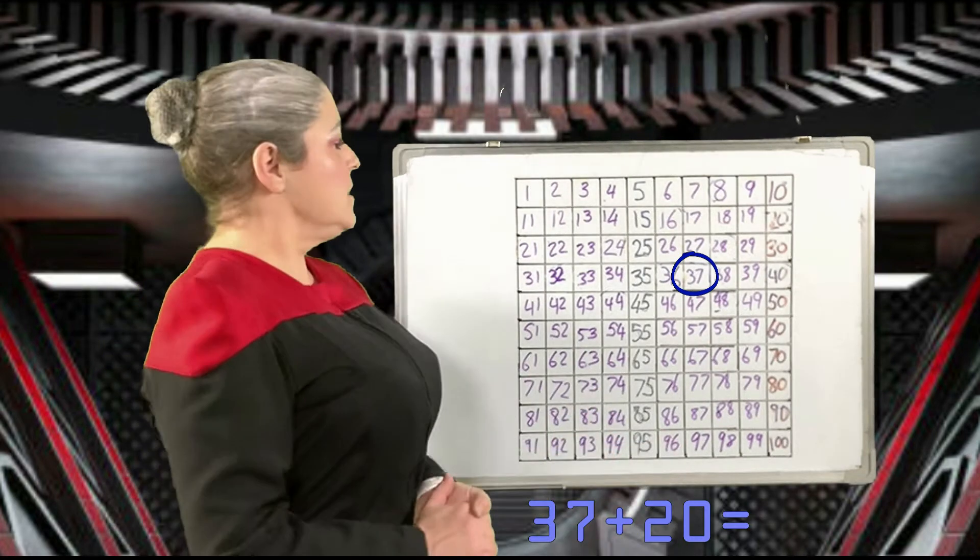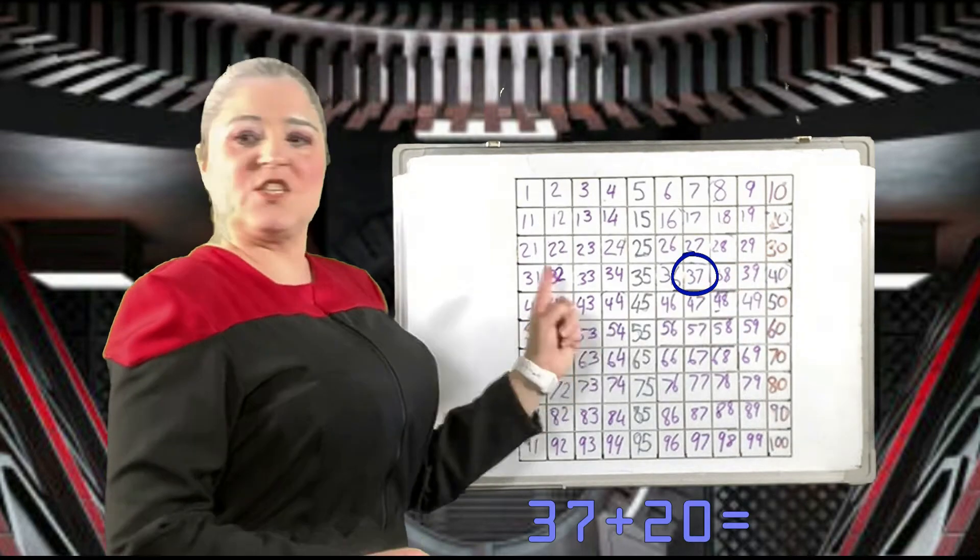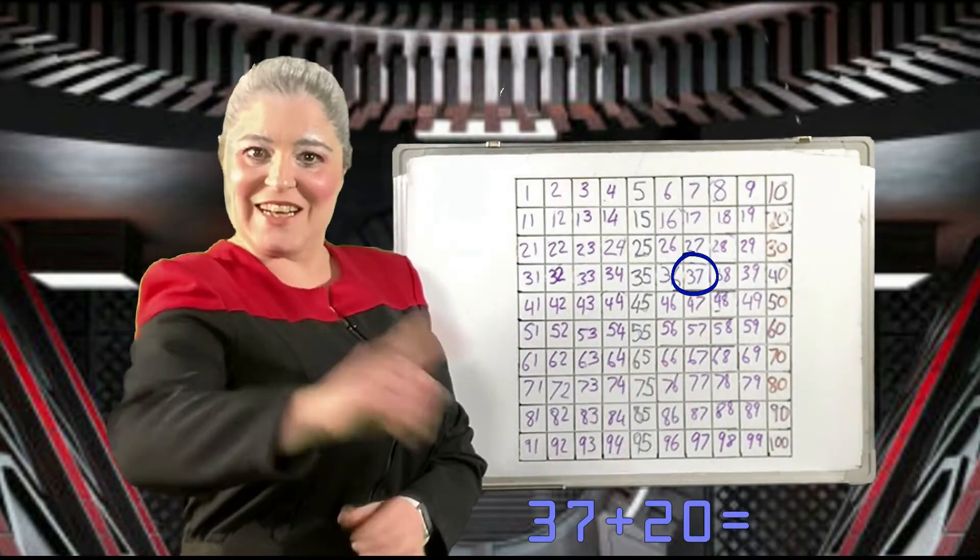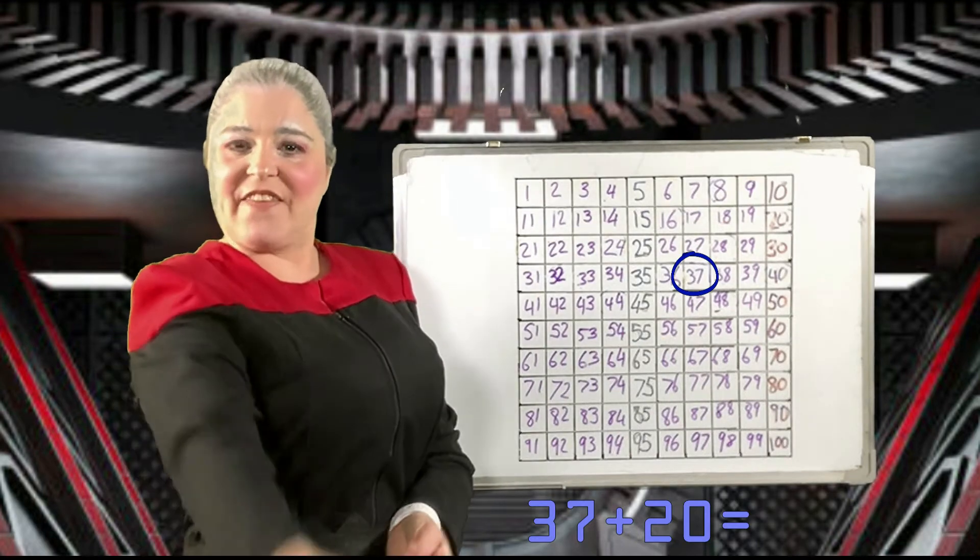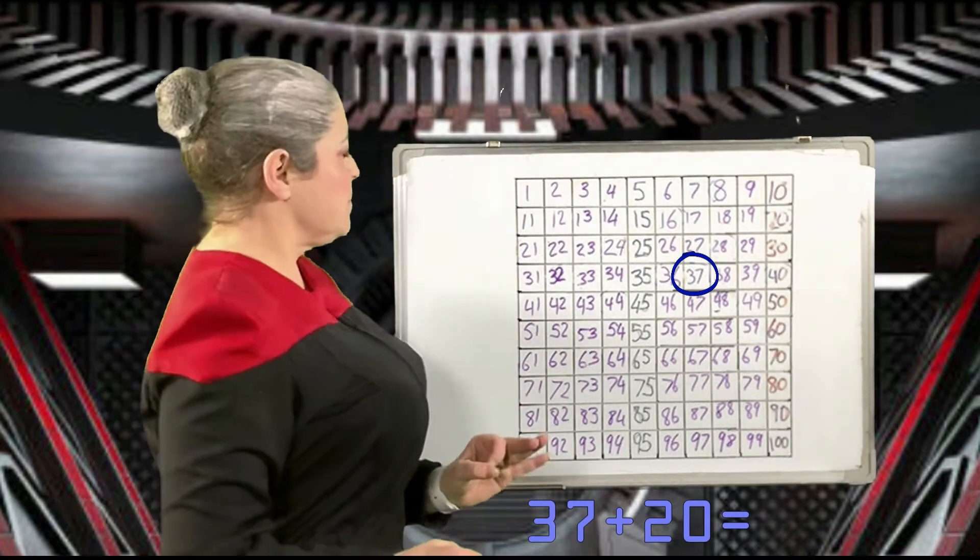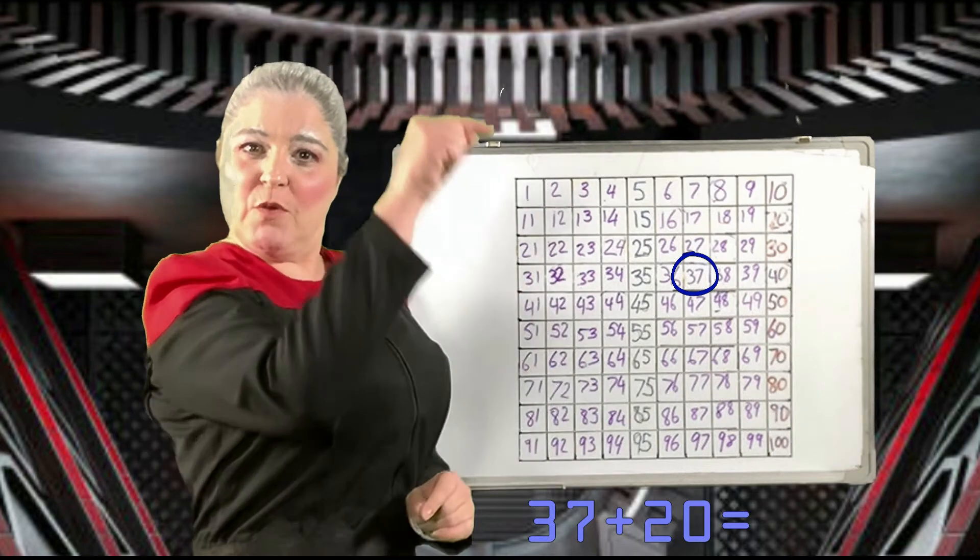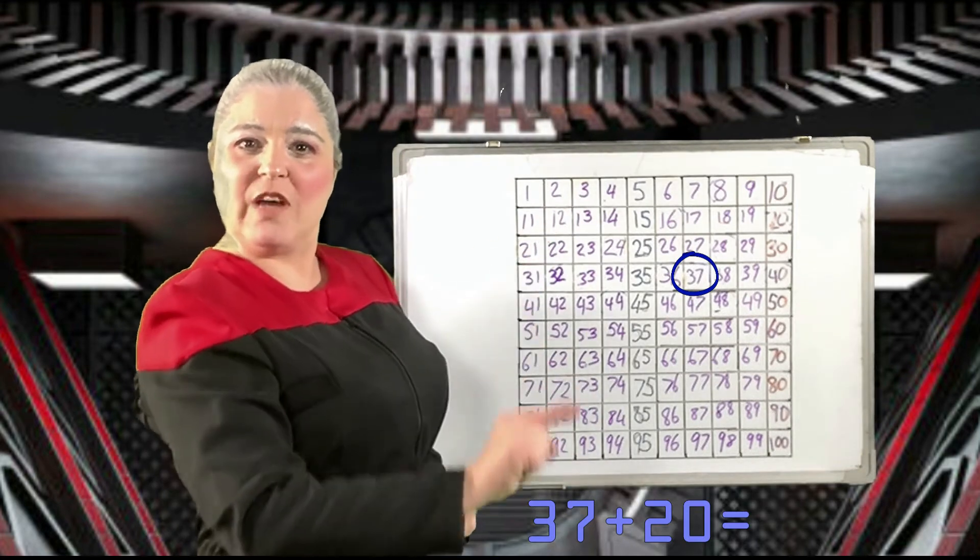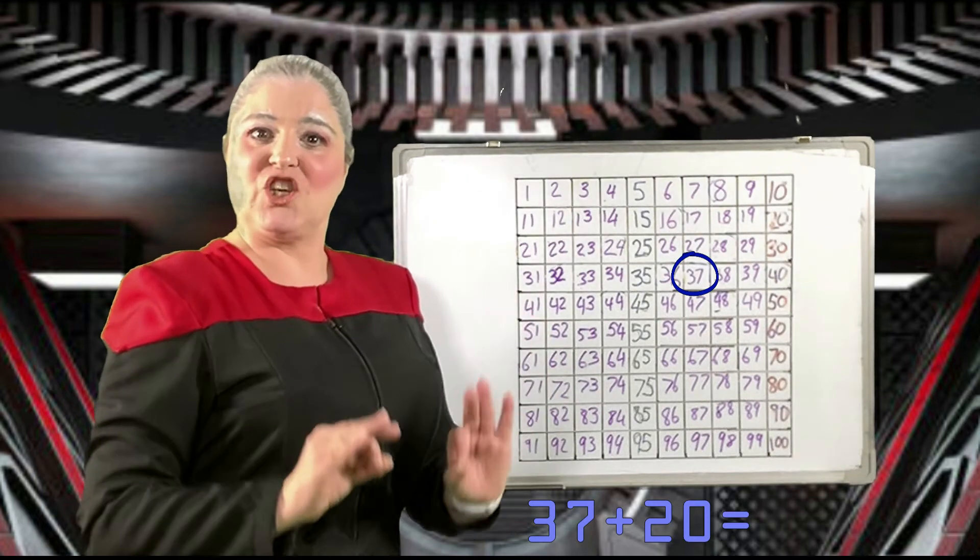Well, to add 20 we could count 20 squares. But what I learned on the planet was that there is a shortcut to adding multiples of 10. To add multiples of 10, we move straight down the number square, one square for each 10.